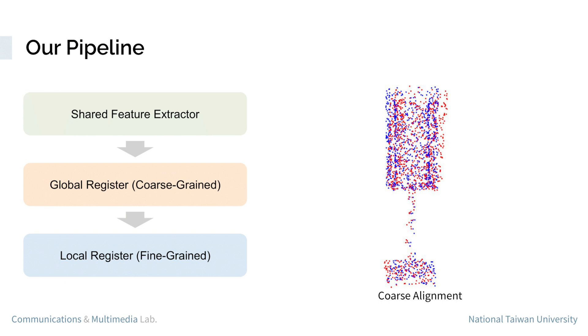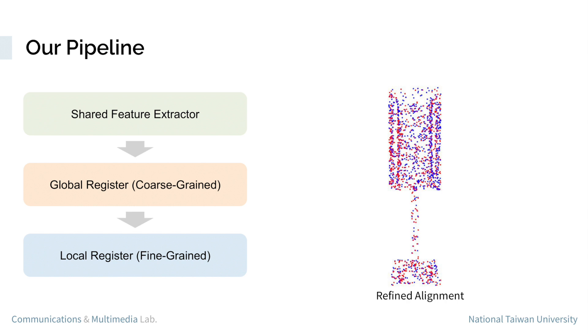And third, a local register to refine the misalignment caused by distribution variances.